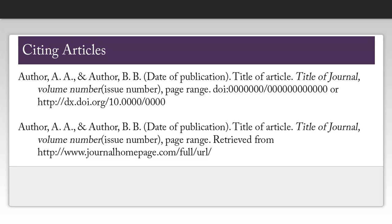Citing articles is similar to citing books, except you need a little bit more information. In addition to the author and the date of publication, you have to get the article title, the journal title, the volume and issue number if applicable, the page range of the article, and either the digital object identifier — known as the DOI — or the journal's homepage. This is not the same as the URL where you found the article; it is actually the website for the journal that published the article. Note that the article title is exactly like the book title where we only capitalize the first word of the title and the first word of the subtitle. However, the entire journal title is capitalized.